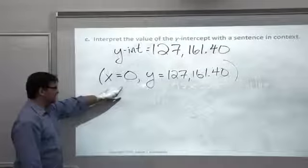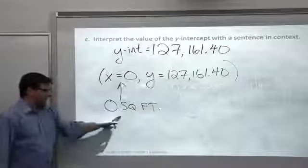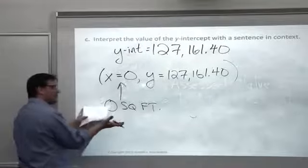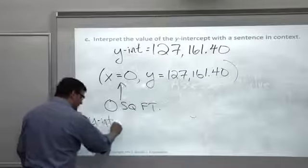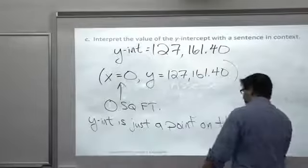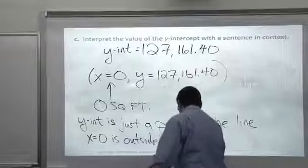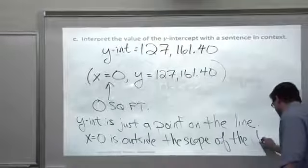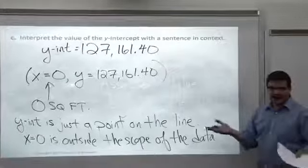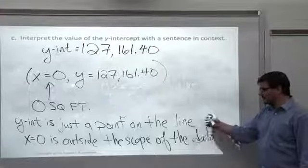Does that point make sense? This says zero square feet. Do I have any homes in this neighborhood that are zero square feet? I don't. This is definitely outside the scope of the data. So we can't really interpret that value. Y-intercept is just a point on the line with no real meaning. X equals zero is definitely outside the scope of the data. So to try to meaningfully interpret this value would be extrapolation. The smallest homes in the neighborhood, I think, are maybe about a thousand square feet. So we have no data anywhere close to X equals zero. And this is what we would say: Y-intercept is just a point on the line.